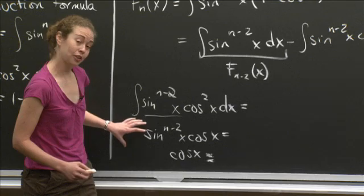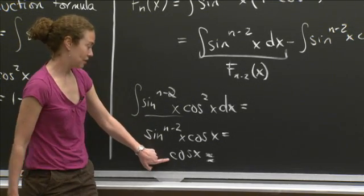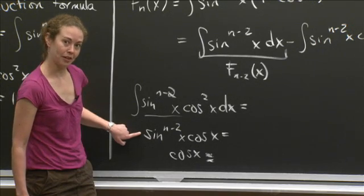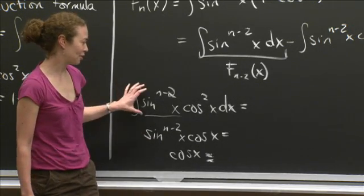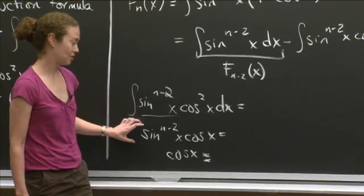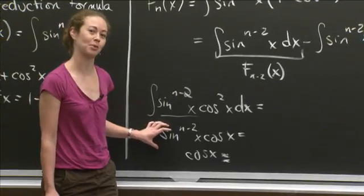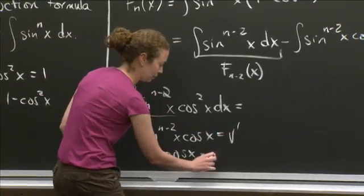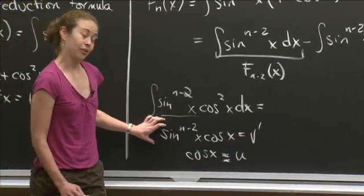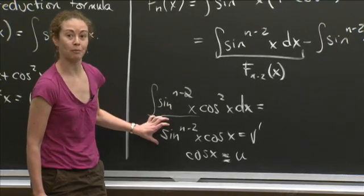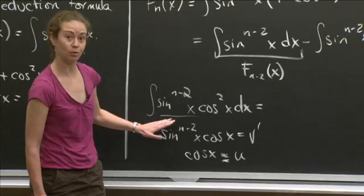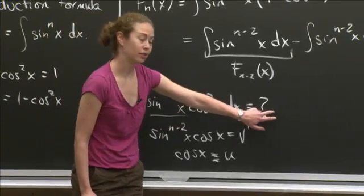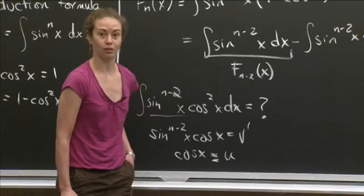I'm going to use an integration by parts. The piece sine to the n minus 2 x times cosine x is easy to integrate via substitution, so I'll make that v prime. Cosine x will be u. Notice that one of the steps of integration by parts here requires a substitution — so it's a little tricky. Let me come over to the other board to make sure I do the v prime integral right, and then we'll finish this off. This should be uv minus the integral of v du.